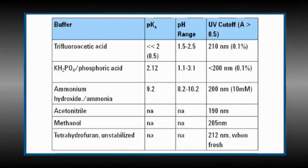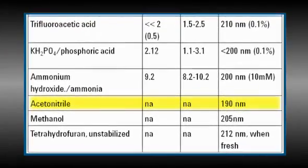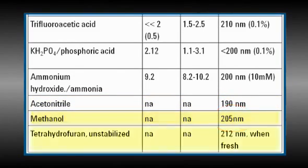We'll include all this in the notes, which you can find by searching for gradient video notes on Agilent.com. One of the reasons people like to use acetonitrile is its low UV cutoff, 190 nanometers, whereas methanol is 205 nanometers and THF is 212 nanometers.